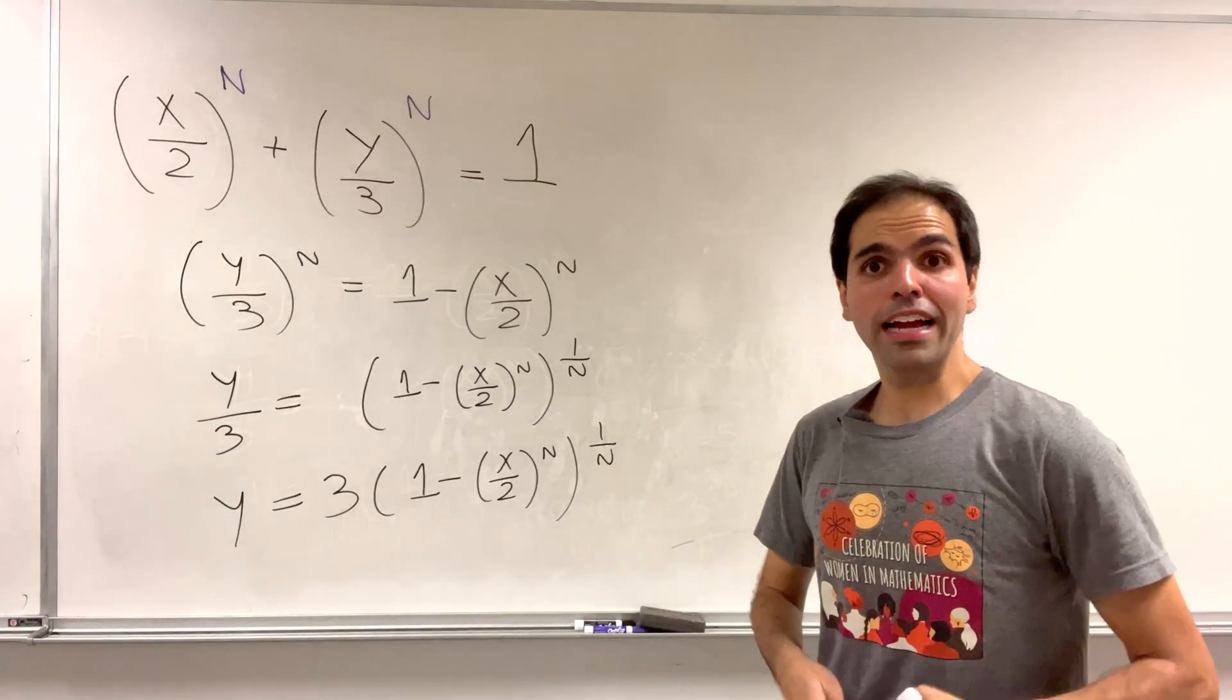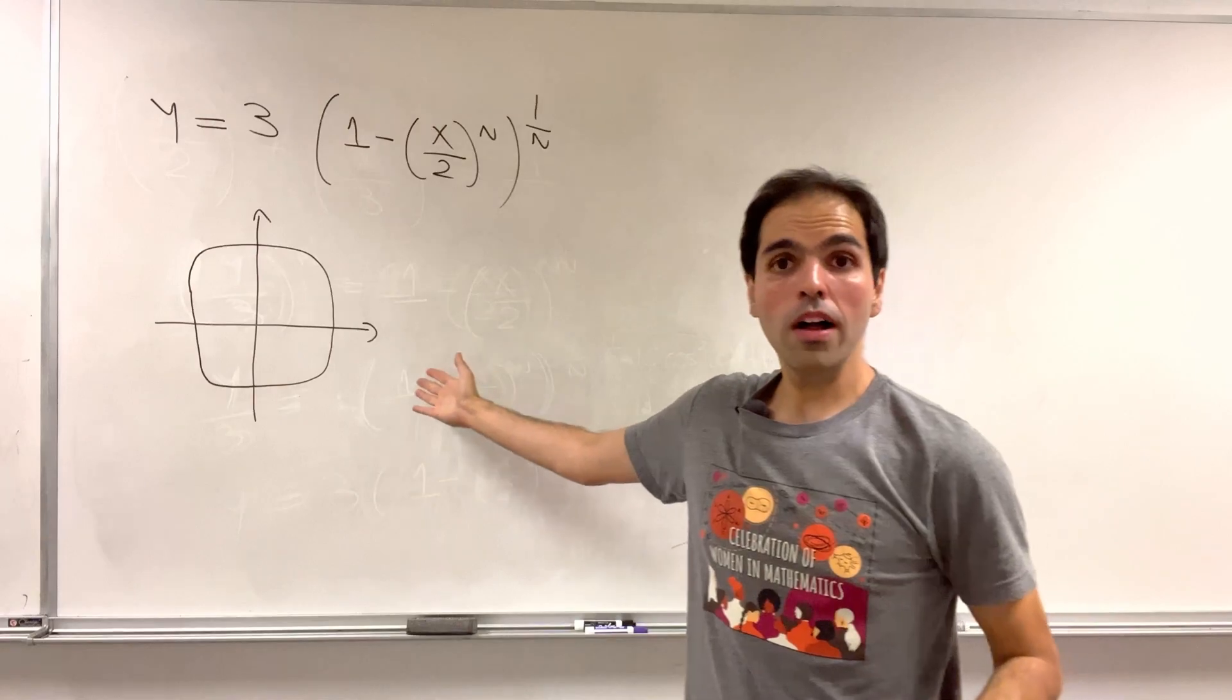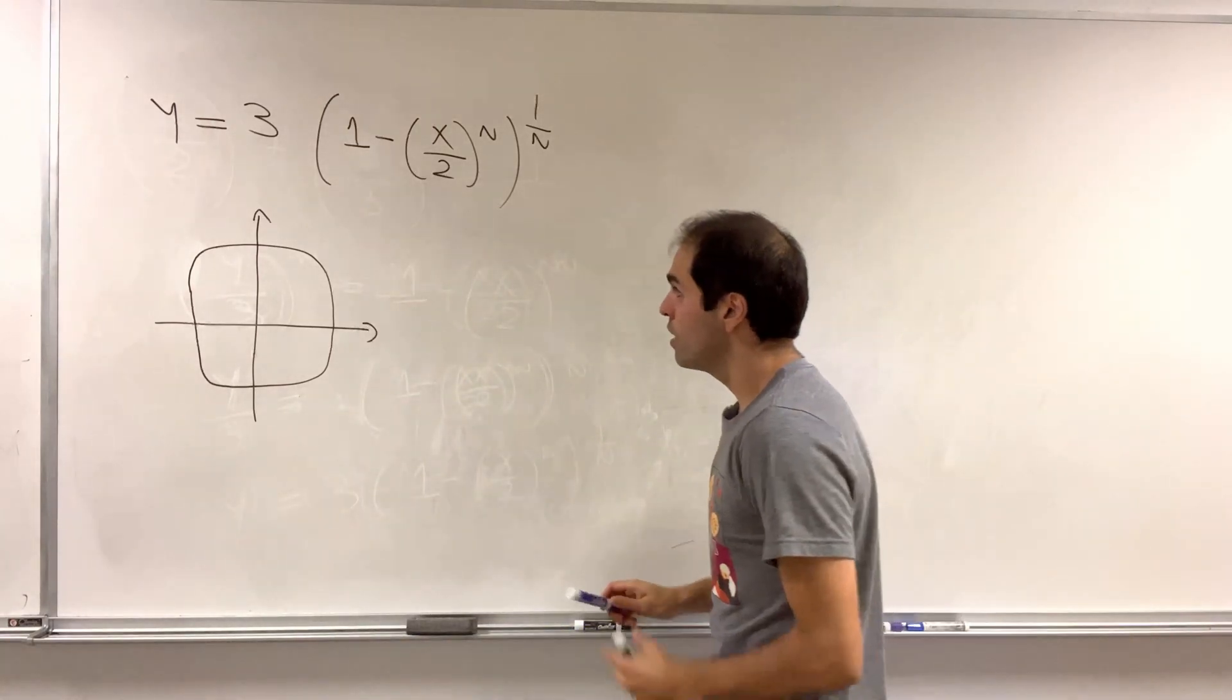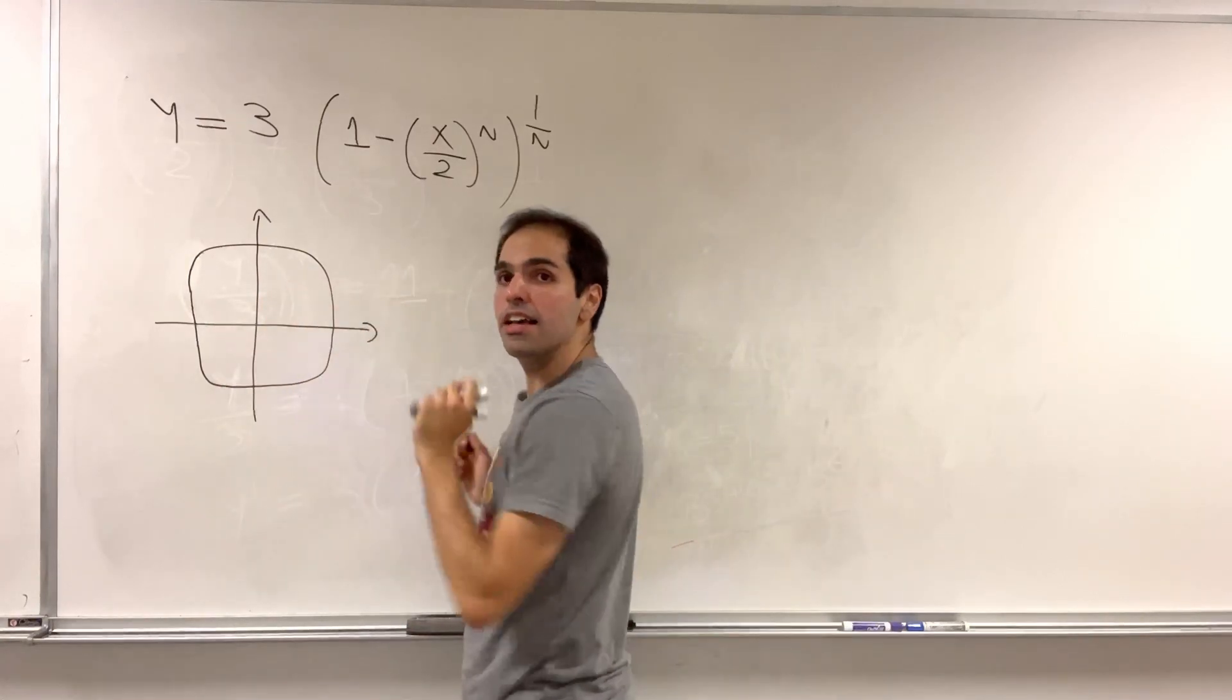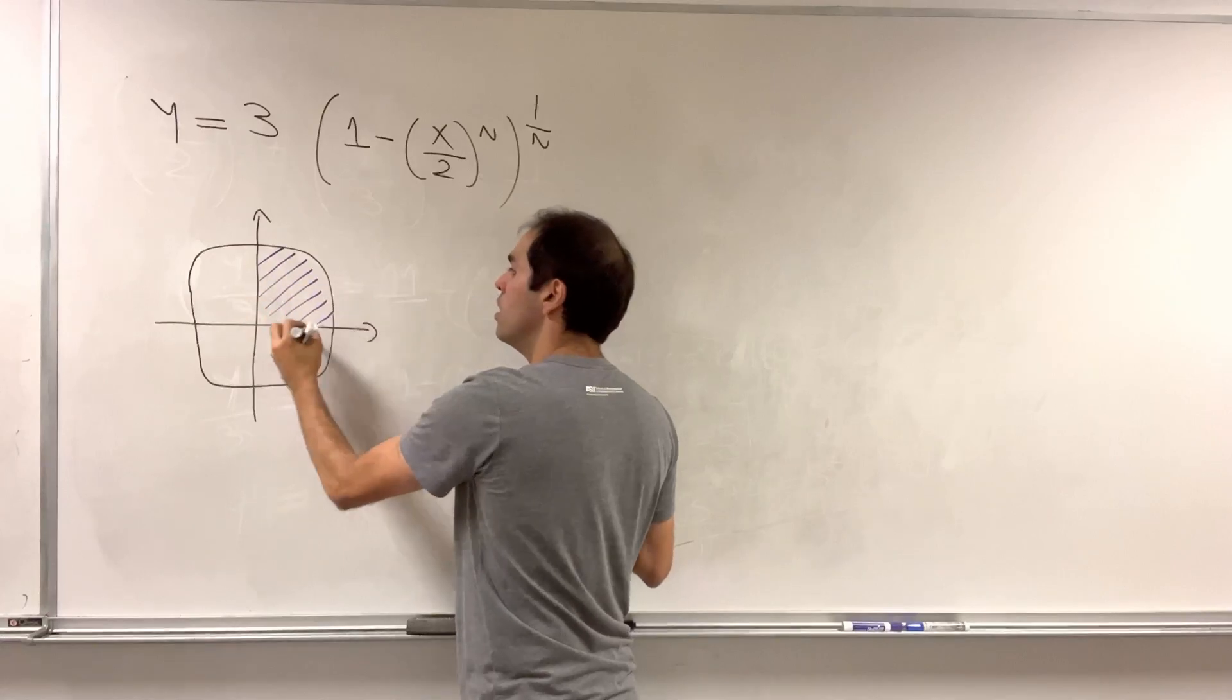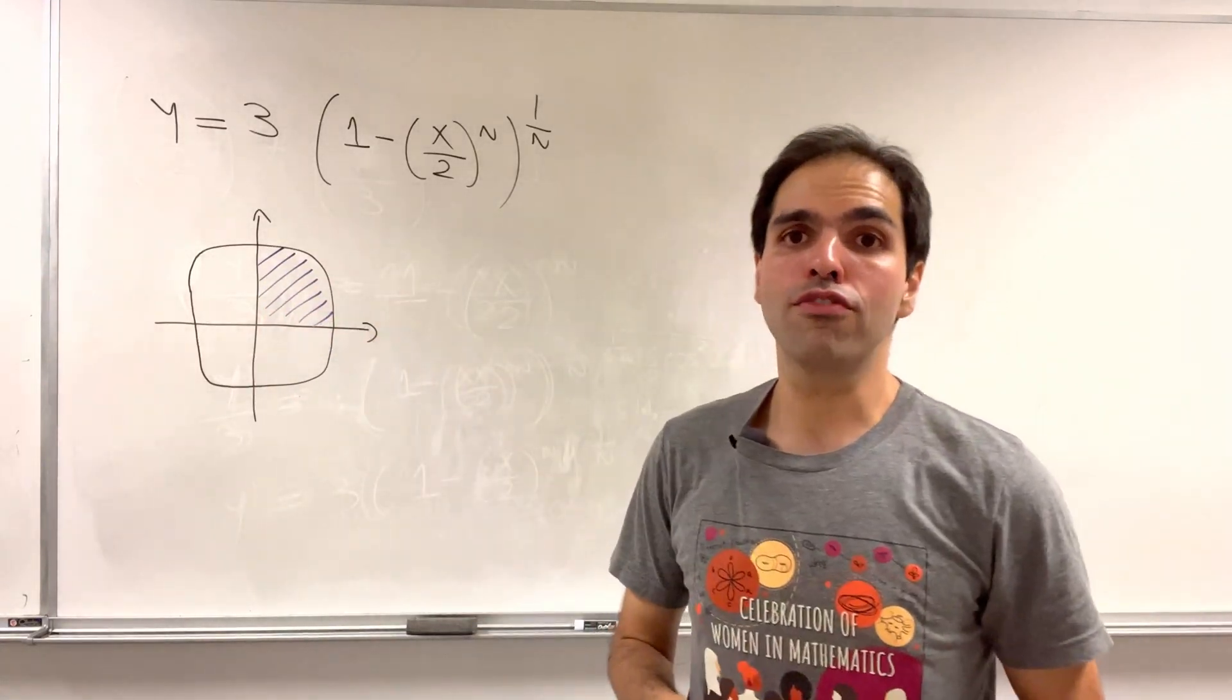Now let's look back at the picture of the super ellipse. Notice there is some kind of symmetry involved because each quadrant has the same area, so really all we need to do is calculate four times the area in the first quadrant.